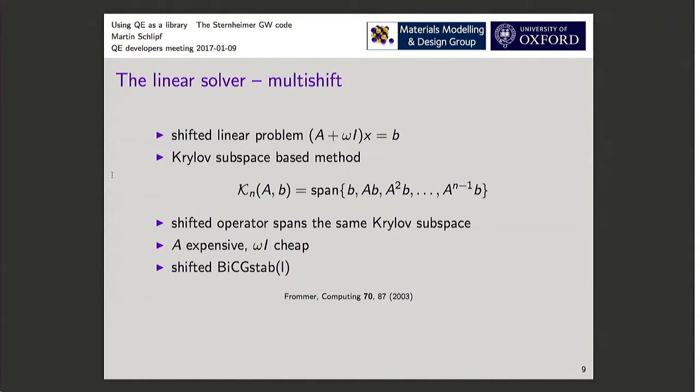The linear solver that we use is a multi-shift solver. The idea is that you have, what we want to solve is a linear problem of this kind: A plus omega I times x equals b. You want to solve this for a lot of different frequencies. The idea here is that you use a Krylov subspace method. And the Krylov subspace spanned by this operator is the same for all frequencies. You can see the identity matrix does not change the vector, so the space is the same.